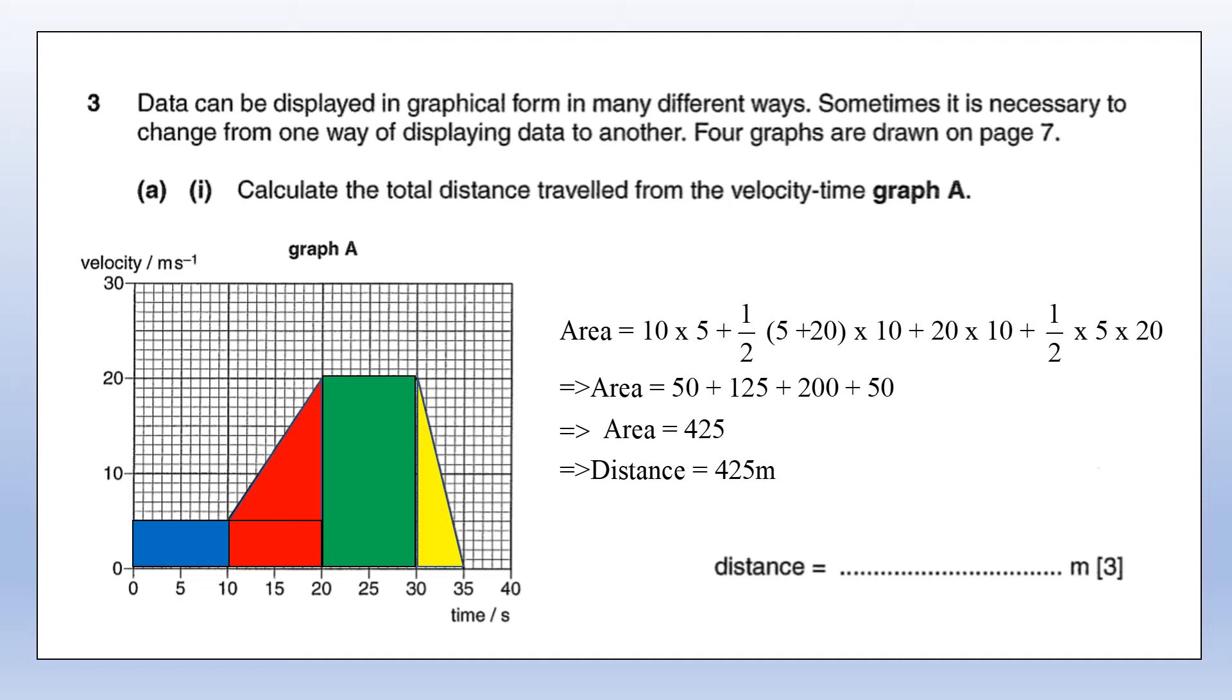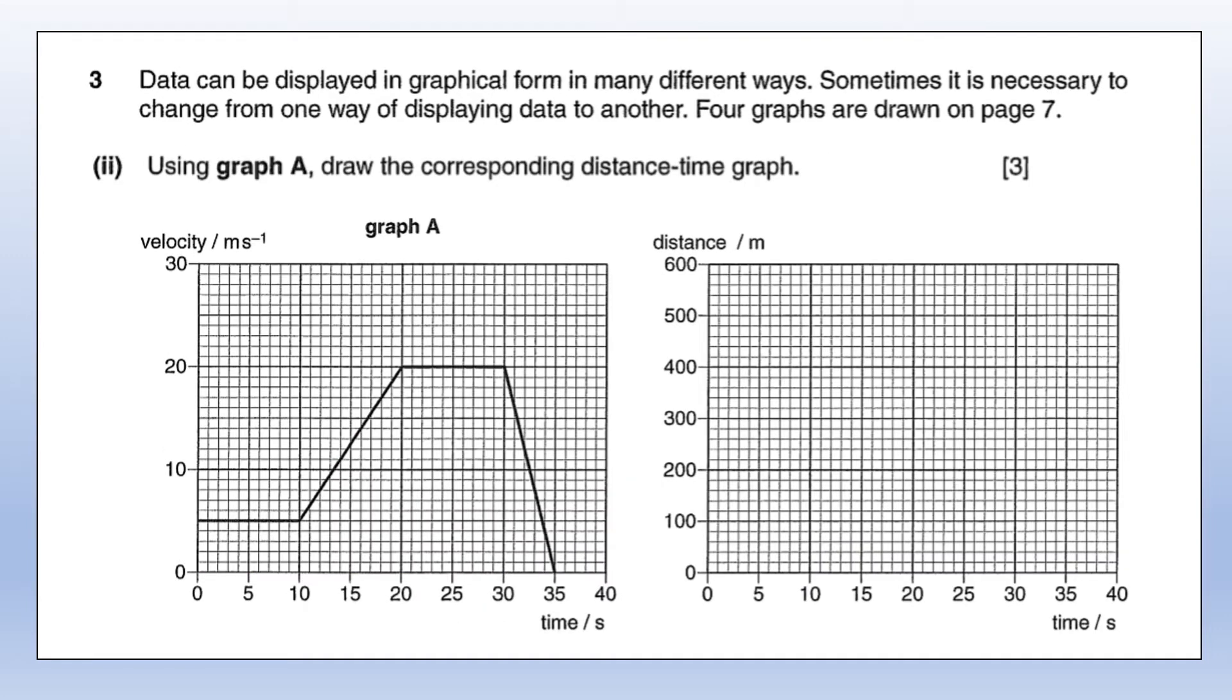We're going to try to construct the distance versus time graph. In the first section we're at constant velocity, which means it's going to be a straight line graph, traveling 50 meters in the first 10 seconds. During the next 10 seconds it travels 125 meters but at increasing speed, so the gradient is going to be increasing. The next section is at constant velocity, traveling 200 meters. Finally, it's decreasing velocity, so a decreasing gradient, traveling a total distance of 50 meters during that section.